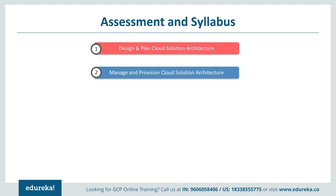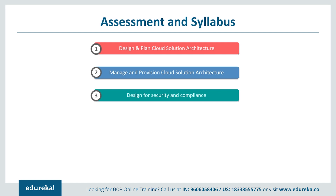Section two is managing and provisioning a cloud solution architecture. One should be good at configuring network topologies, which includes extending to on-premises or hybrid networks, extending to a multi-cloud environment, and security features. Other topics include configuring individual storage systems, data storage, application data processing, compute processing, security, and access management.